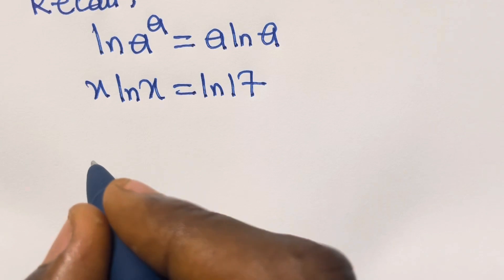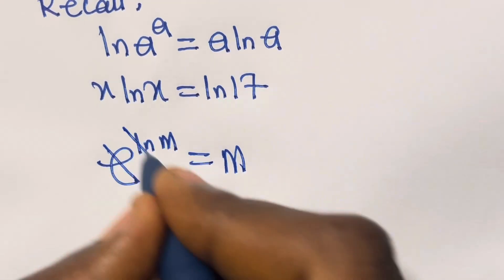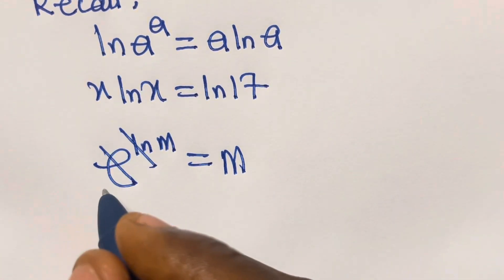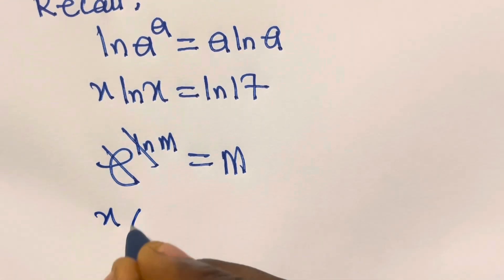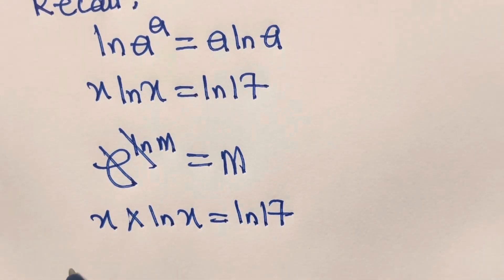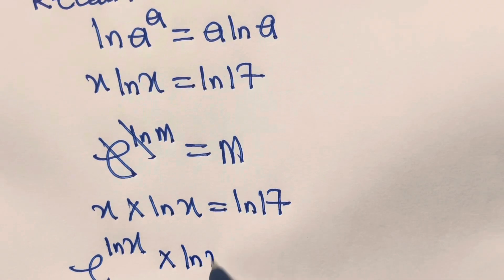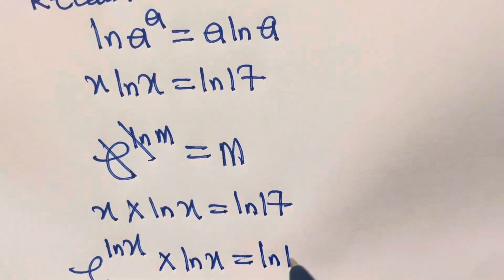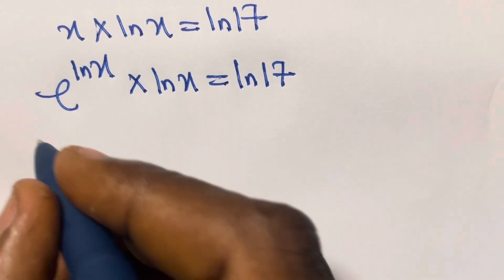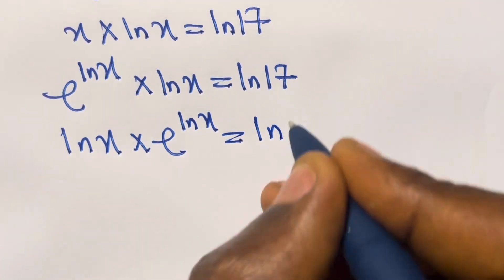Now, recall that e raised to the power ln m equals m, because the exponential and ln cancel each other. So x can be written as e raised to the power ln x. Then ln x multiplied by e raised to the power ln x equals ln 17.